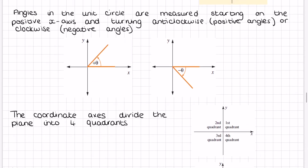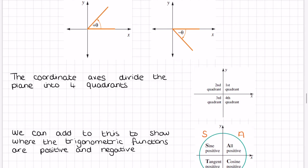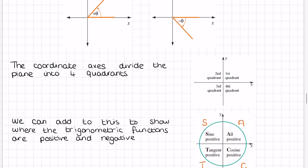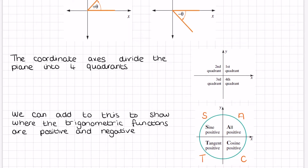The coordinate axes divide into four quadrants — 1st, 2nd, 3rd, and 4th — as you can see in that diagram. We can add to this to show where the trigonometric functions are positive and negative: they're all positive in the first quadrant, sin in the second, tan in the third, and cos in the fourth.